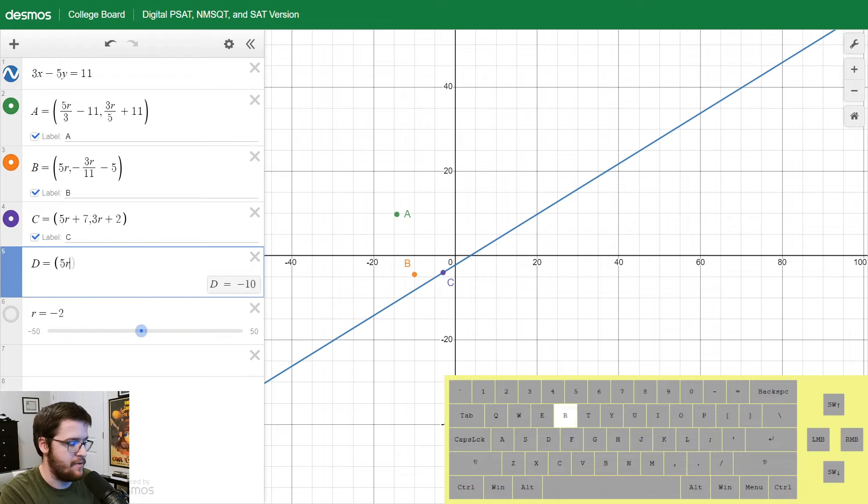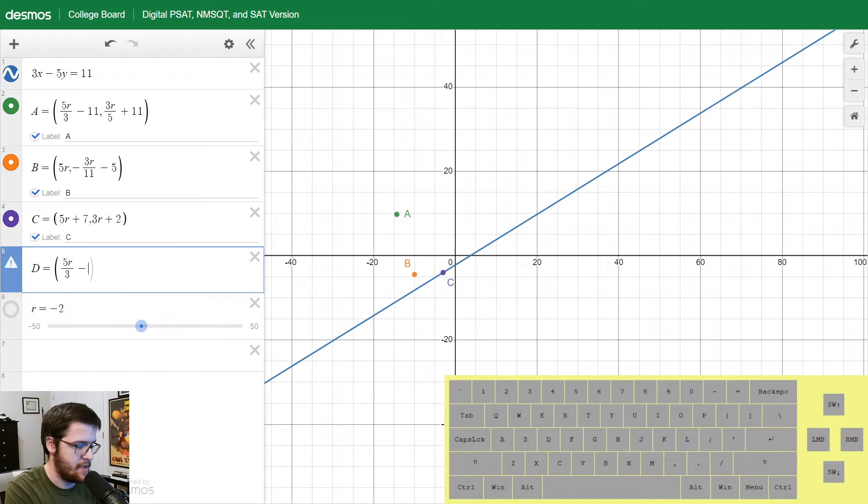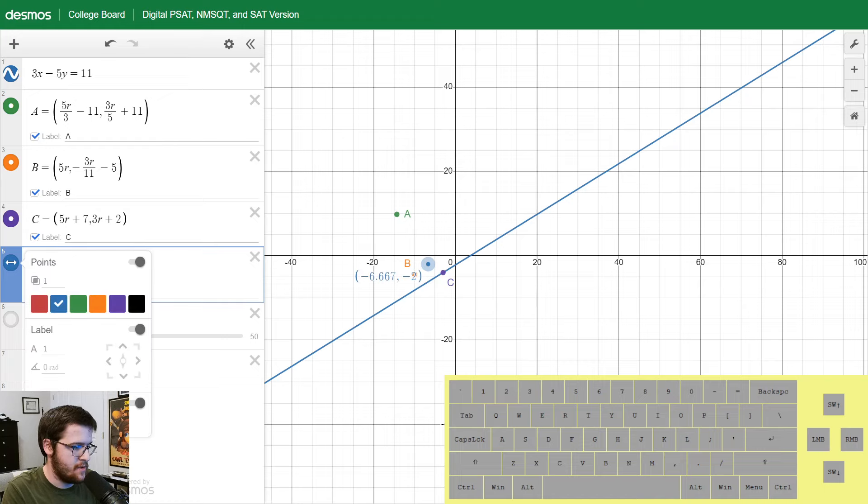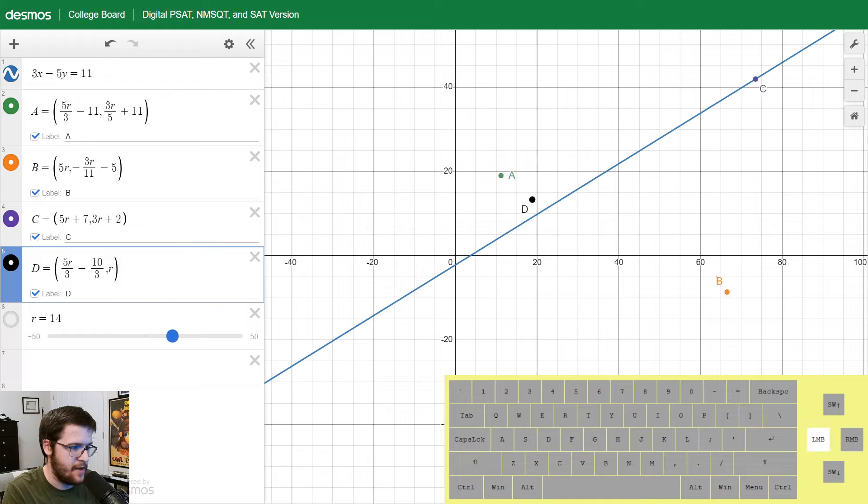I'm going to do 5R over 3 minus 10 over 3, comma R. I'll label it, turn the drag off, make it black, and label this capital D. Let's see what happens. As I move the slider, it seems like D is moving in a perfectly straight path parallel to the blue line. So this is a no solution path. It will never cross. For any number R you can think of, it will never touch the blue line. So that means D is our answer. Let's go back and lock that in.